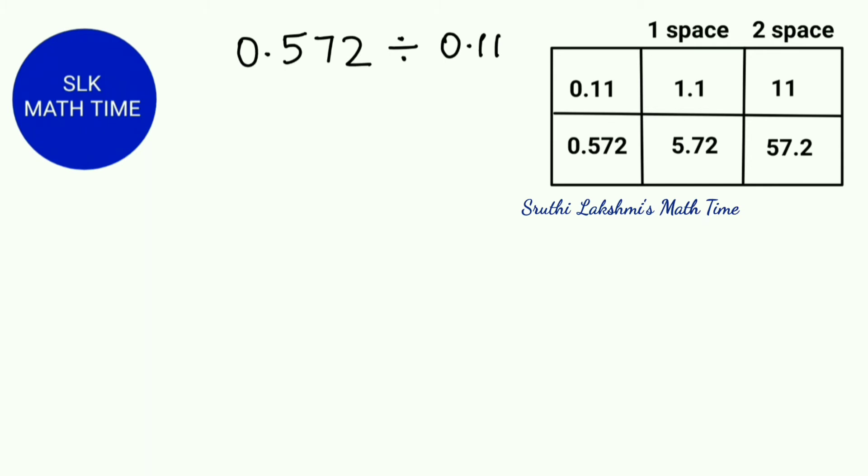If we do this new division problem, we will get the exact same answer as we would have got if we divided 0.572 divided by 0.11. So let's do our new division problem, which is 57.2 divided by 11.